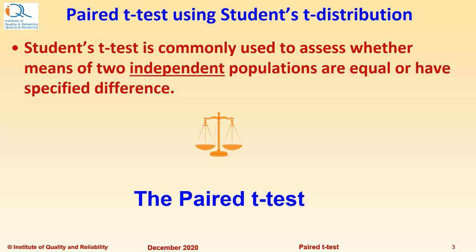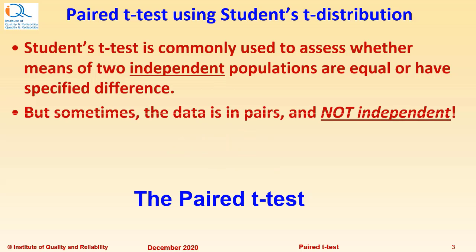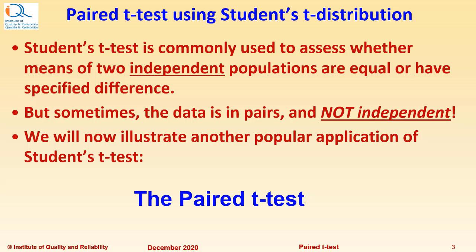Student's T-Test is commonly used to assess whether means of two independent populations are equal or have specified difference between them. But sometimes the data is not independent and it is actually in pairs. We will now illustrate another popular application of Student's T-Test – the Pair T-Test.